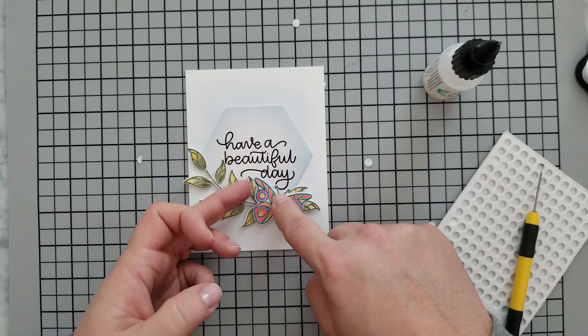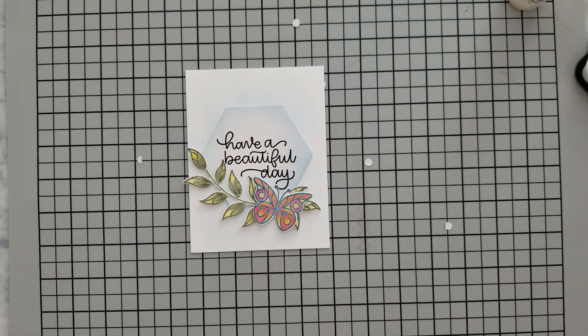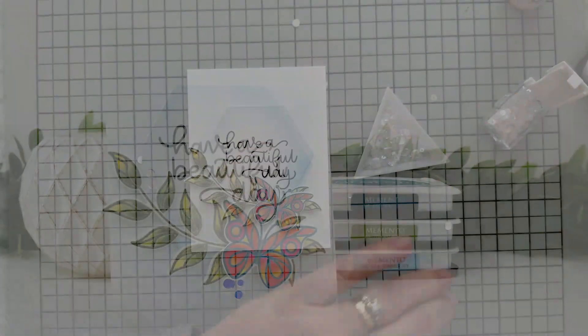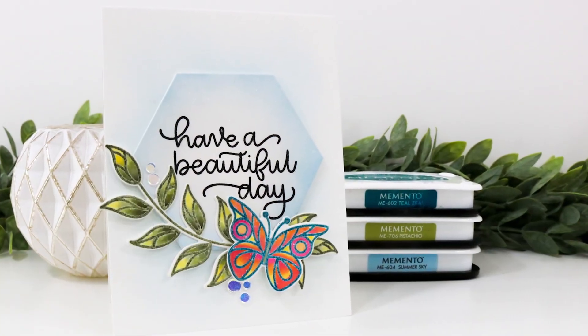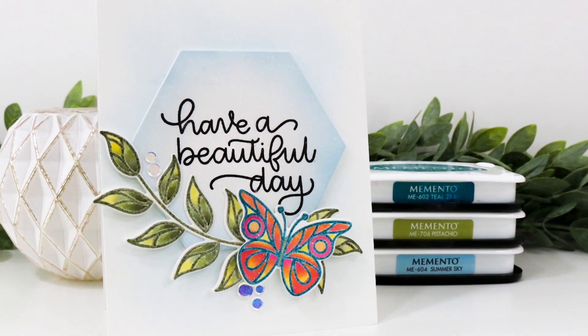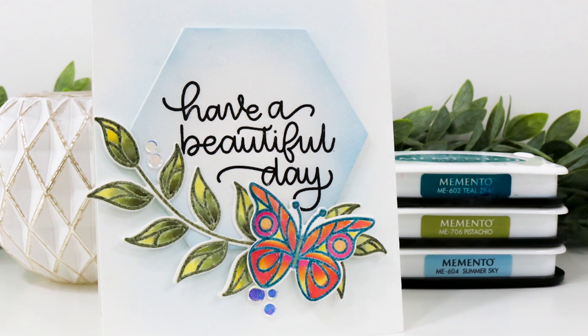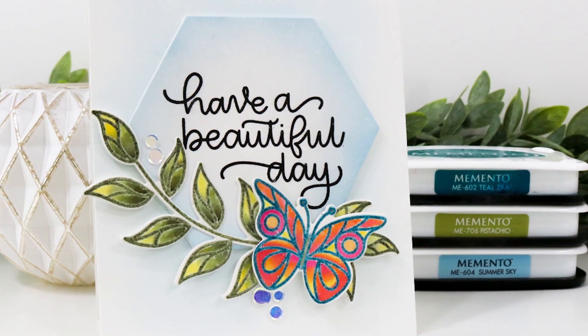Then arrange your leaves and your butterflies however you like and use some small round foam adhesives along with your own point glue to adhere all of this to the front of your card. You're going to finish this off with a few sequins or you could use enamel dots if you wanted to. But that's going to bring us to the end of this video.